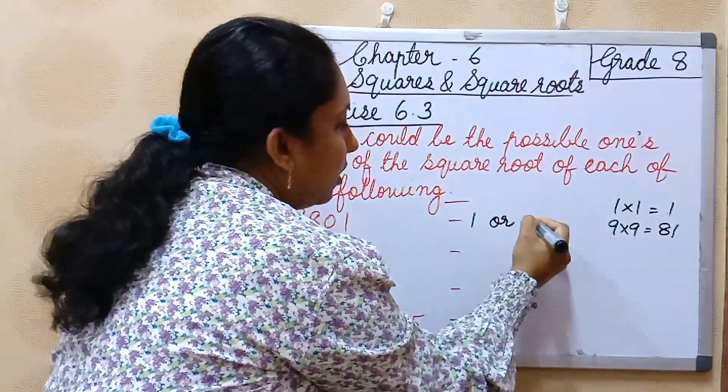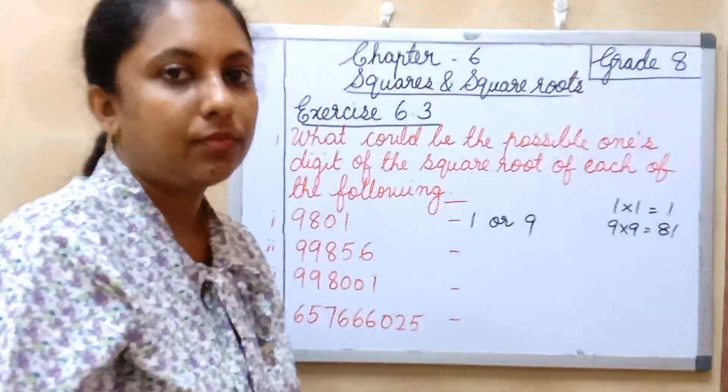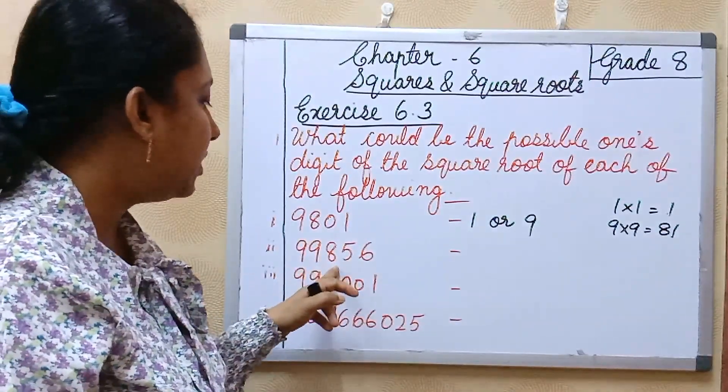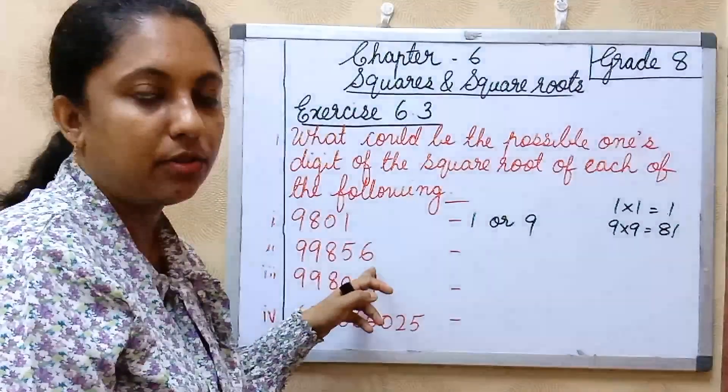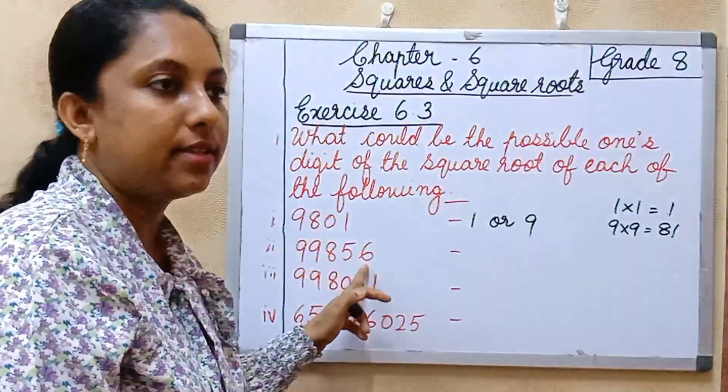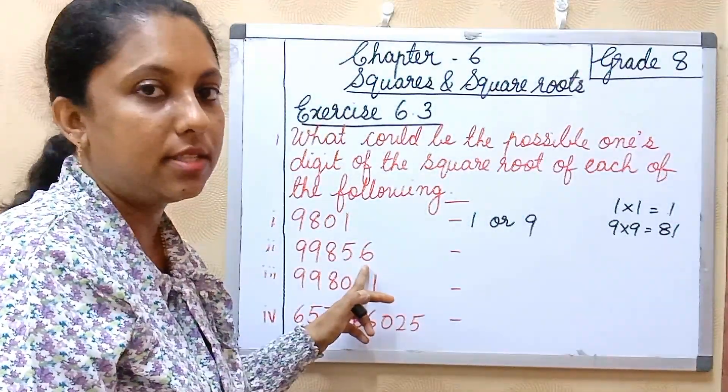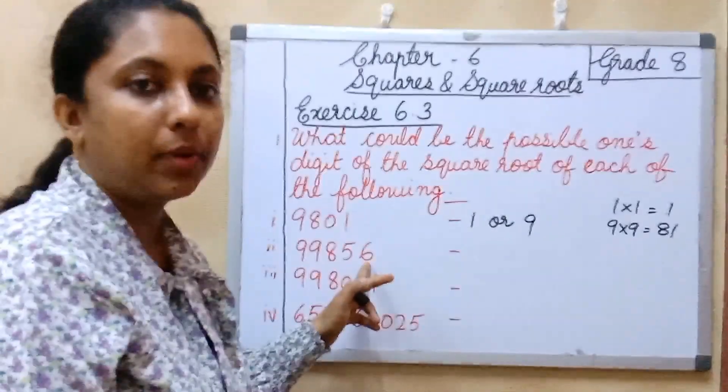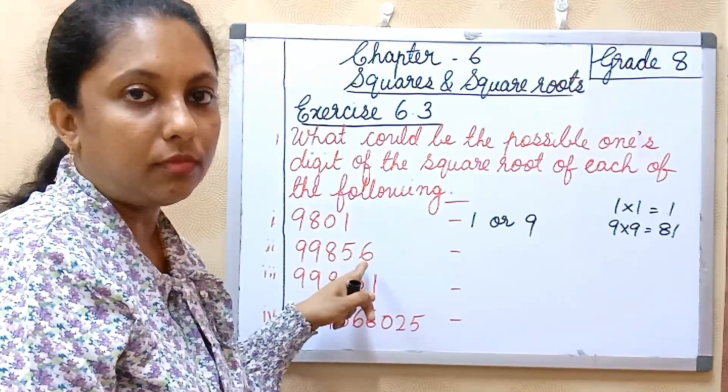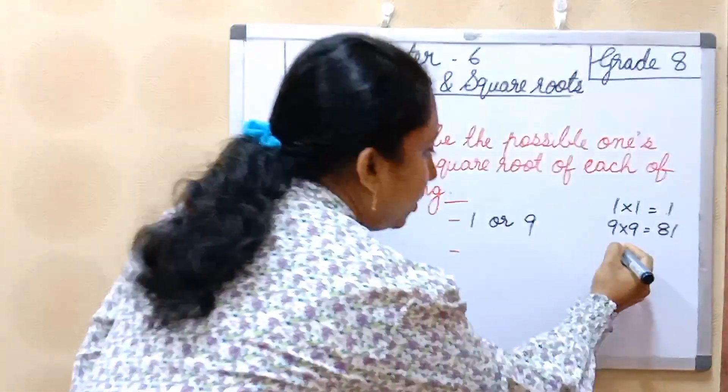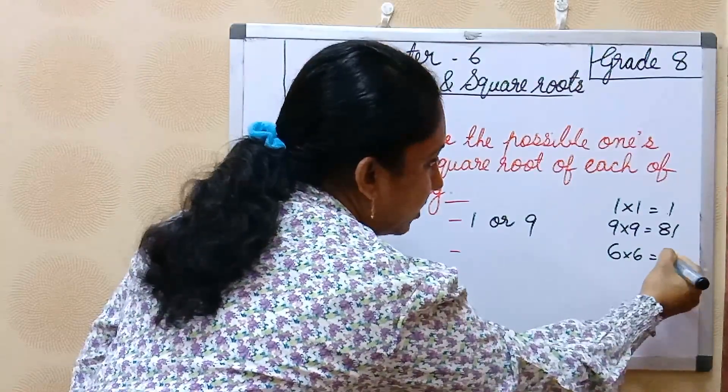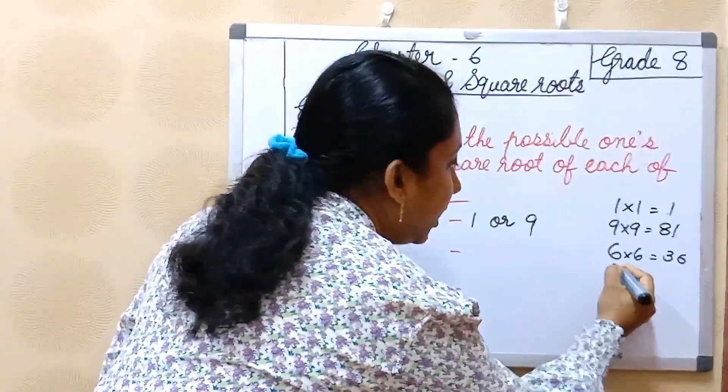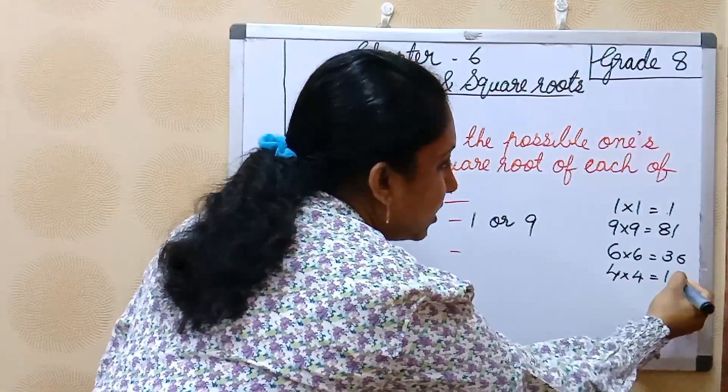So here possible ones digit of this number, square root of this number, is 1 or 9. Next question: 99,856. Here also you should check the ending digit, that is ones place digit. Here ones place digit is 6. So how we get 6 in ones place? Square root of the number.